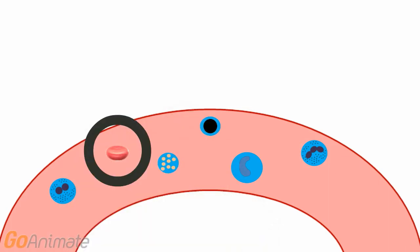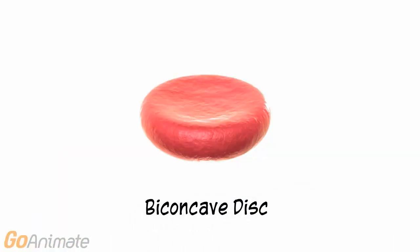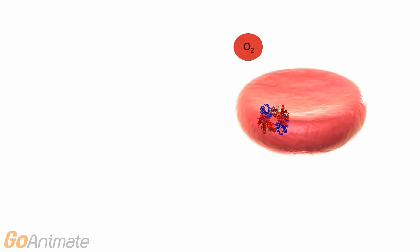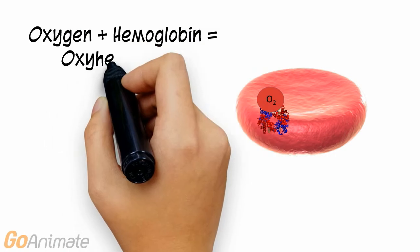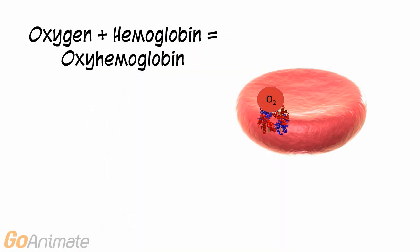Let's take a closer look at red blood cells, or erythrocytes. Red blood cells carry oxygen. They have a unique shape called a biconcave disc that increases the surface area. Red blood cells contain hemoglobin molecules that carry oxygen. Oxygen attaches to hemoglobin to form oxyhemoglobin. This happens in the lungs.